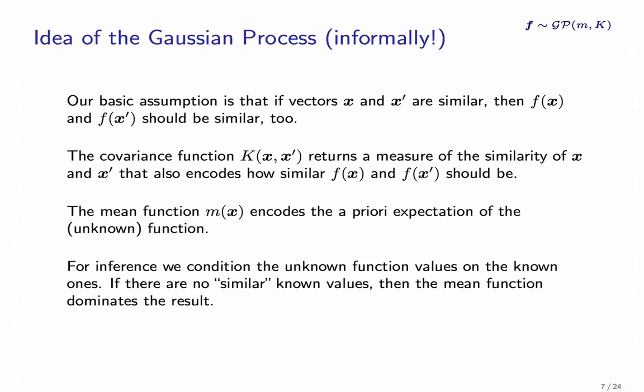The covariance function k takes care of that by returning a measure of the similarity of two vectors that also encodes how similar their function values should be. And with the mean function, we additionally can encode some a priori expectation that we have of the unknown function. So here we can incorporate domain knowledge that we might have.